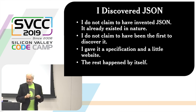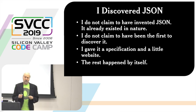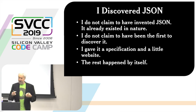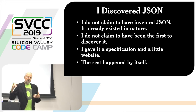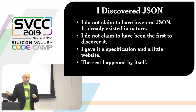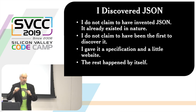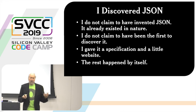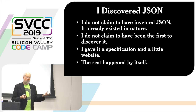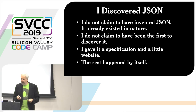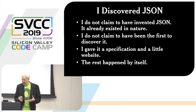I discovered JSON. I do not claim to have invented JSON because it already existed in nature. All I did was identify it and give it a name. In the late 20th century, there were people trying to figure out how to get browsers and servers to talk together in a way which was more efficient than page replacement. There were a lot of people experimenting and figuring out that you could use JavaScript data representations to move data back and forth. The earliest example I was able to find was in 1996, almost immediately after JavaScript was invented. What I did was I wrote a specification and put up a one-page website, and the rest happened by itself.